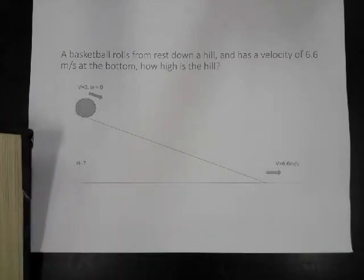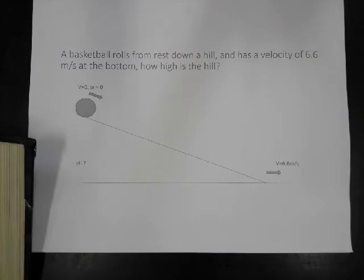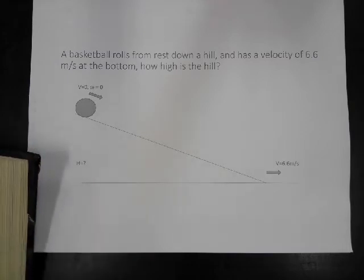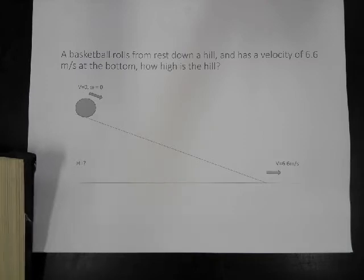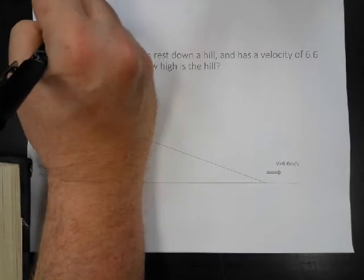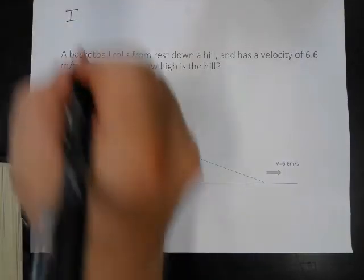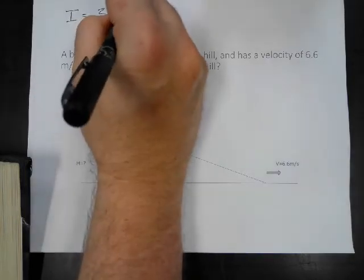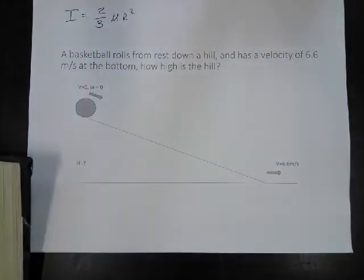So we're going to need a moment of inertia for a thing. A basketball is a thin spherical shell. All the mass is out at the radius. And I have to find where I have moments of inertia in here. Here it is. A thin spherical shell, the moment of inertia, is going to be two-thirds the mass times the radius squared.